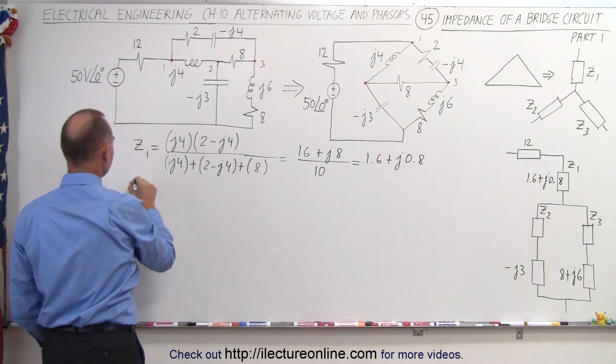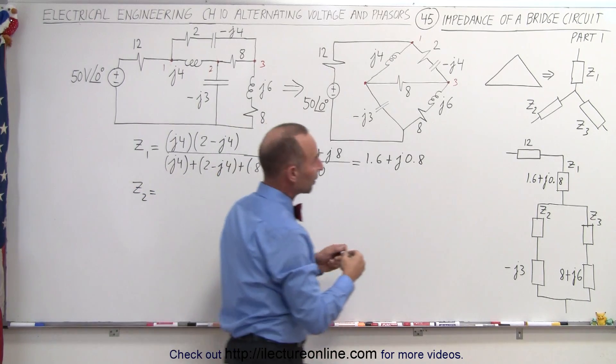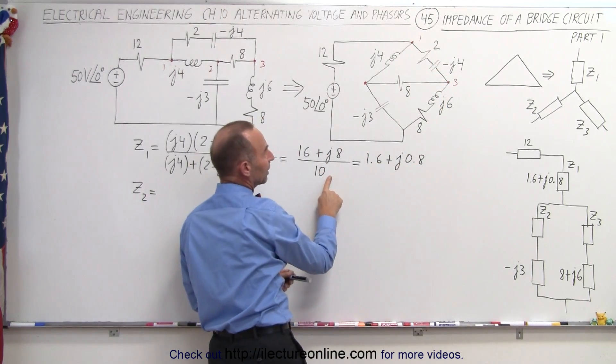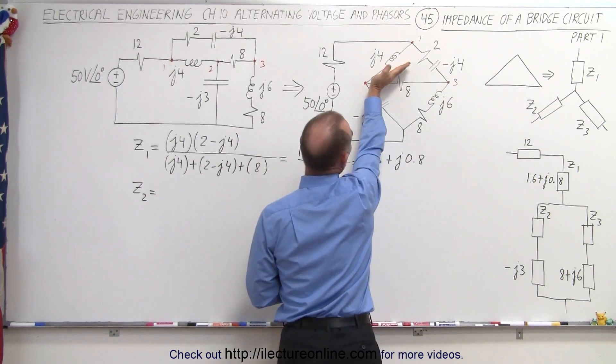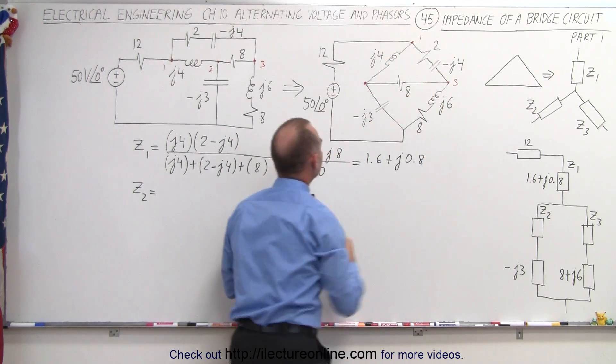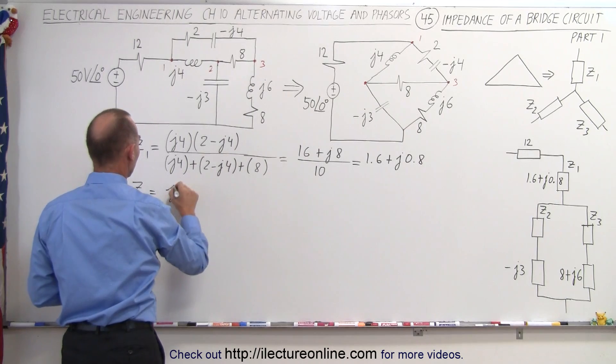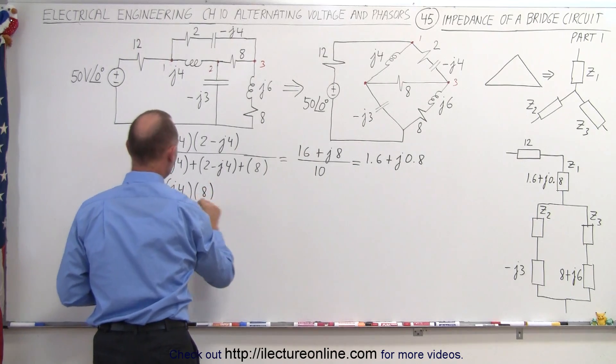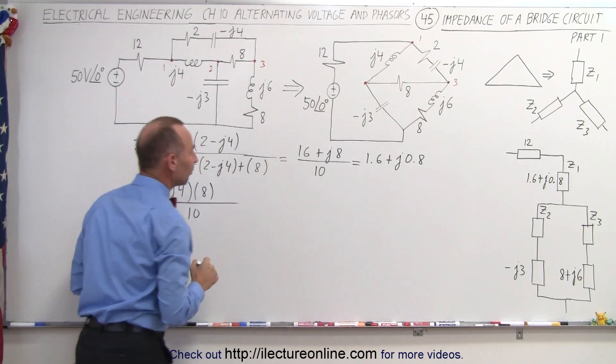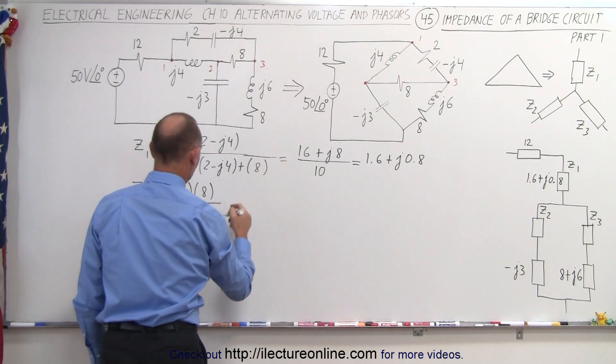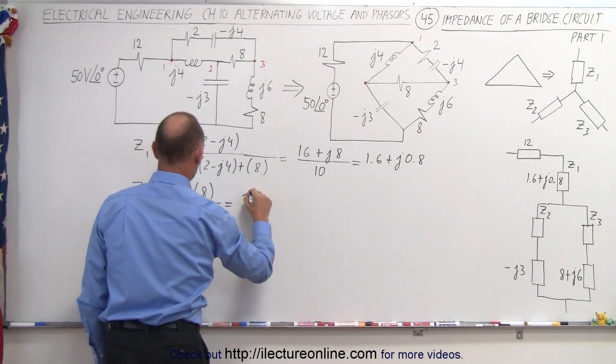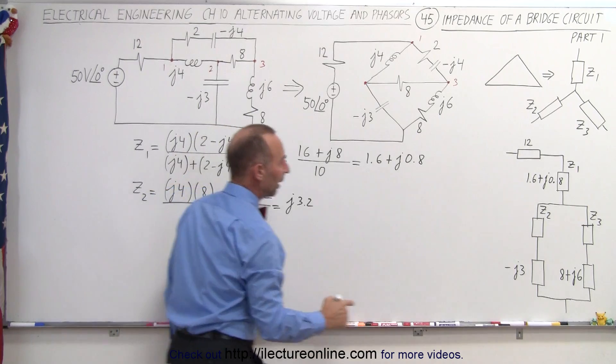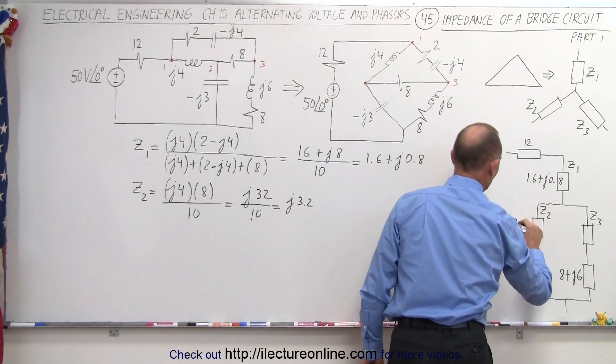Now we're ready to find Z2. Z2 is over here. So that means we're going to take the product of those two branches divided by the sum of the three. Of course we already have the sum calculated here, so this portion right here goes in here. So we take the product of those two divided by the sum. So Z2 becomes J4 multiplied times 8, and divide that by, of course we already know what the sum is of all three branches. So this becomes equal to J32 divided by 10, which is equal to J3.2. And that goes right here. So this is J3.2.